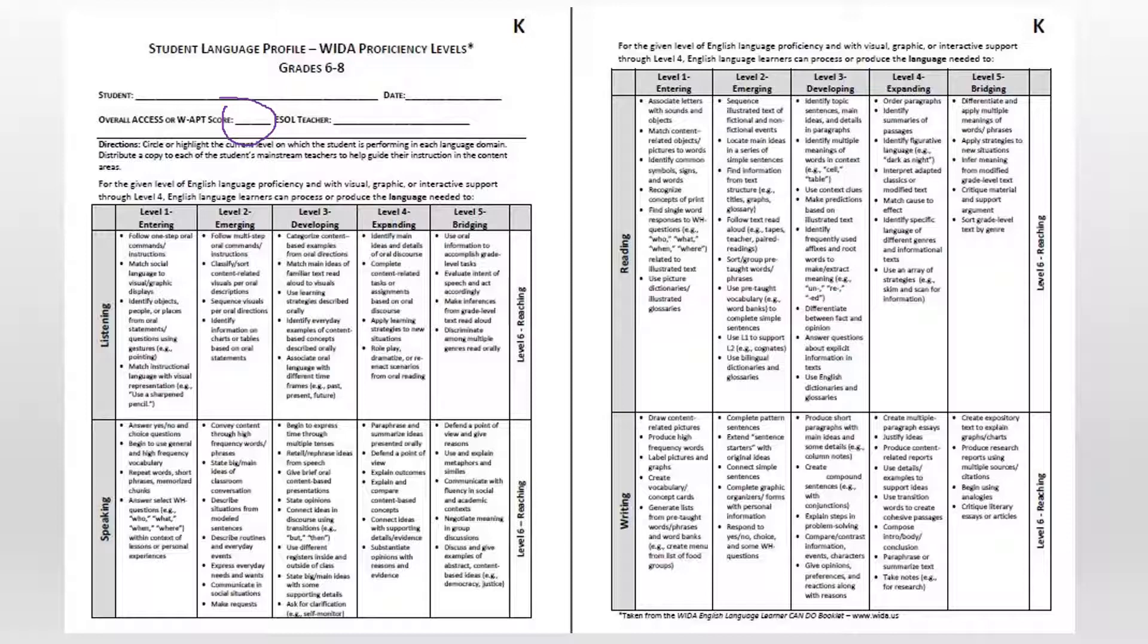Students are identified as language learners when they first enroll and indicate that they speak another language other than English in their home on the enrollment form. Students are then assessed for their English language proficiency level and are given a score from 1 to 6. If students assess between a 1 and a 5, they have tested into the ESOL program. Students then receive ESOL services until they test out and are ready for the general education classroom setting.